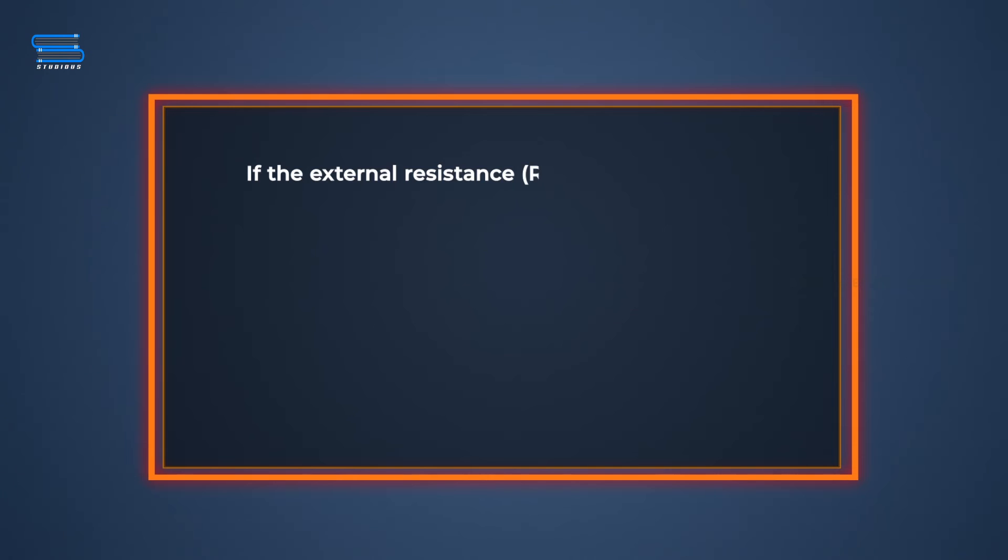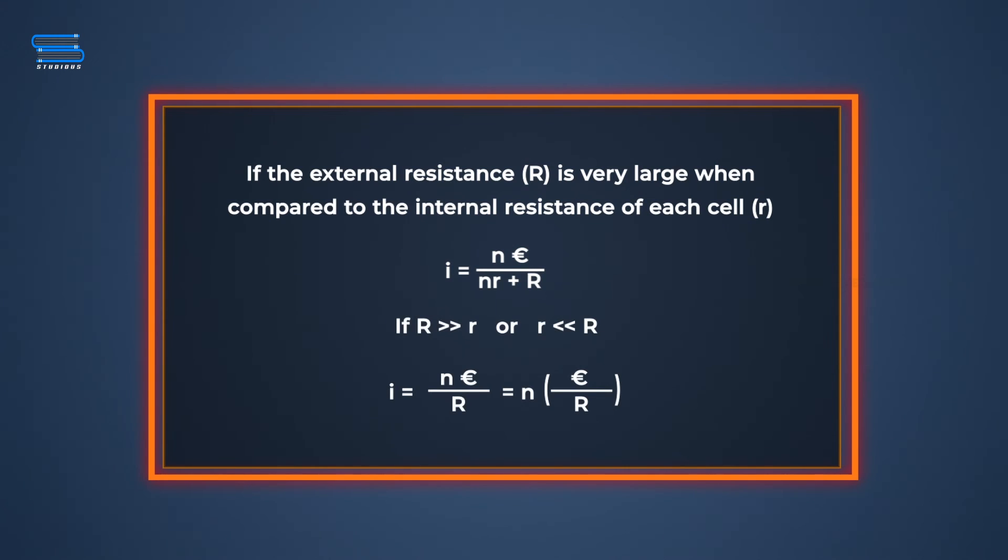Now if the external resistance is very large compared to the internal resistance of each cell, then i is equal to n into epsilon by capital R. So in series combination of cells, i is equal to n times epsilon by capital R when r is a negligibly small value.